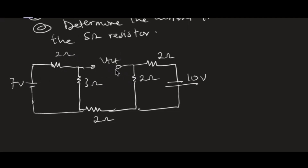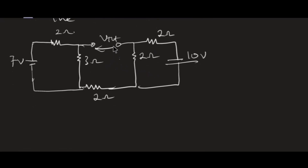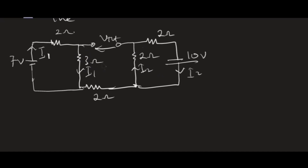I assign a direction to the open circuit voltage VTH. To find VTH, I take a loop where VTH is included. The 7 volt source produces a current I1; I1 passes through the circuit and upon reaching the open circuit, returns. The 10 volt source produces a current I2; I2 also passes through and returns because of the open circuit. So I have I2 going in one direction and I1 coming down.